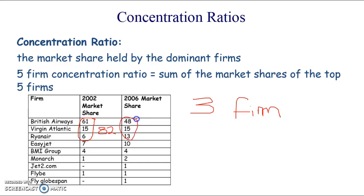And then if we compare it to the concentration ratio in 2006, still using a three firm concentration ratio, this should add up to 76.